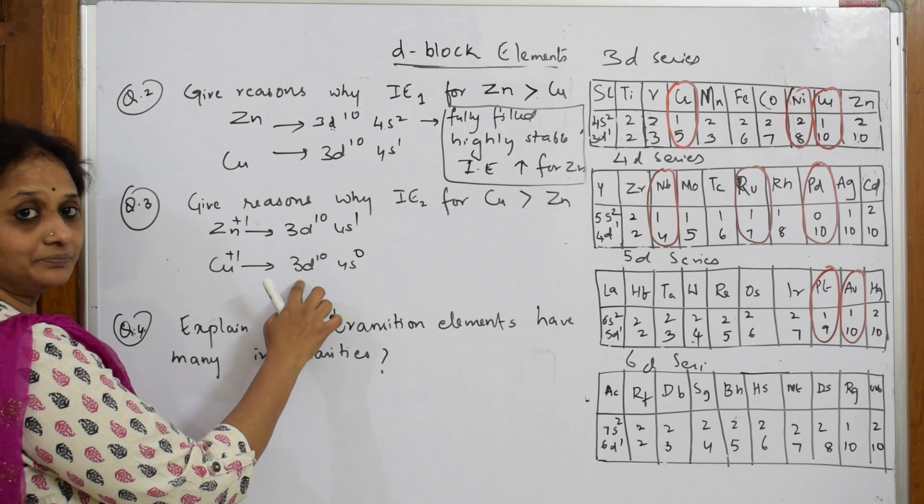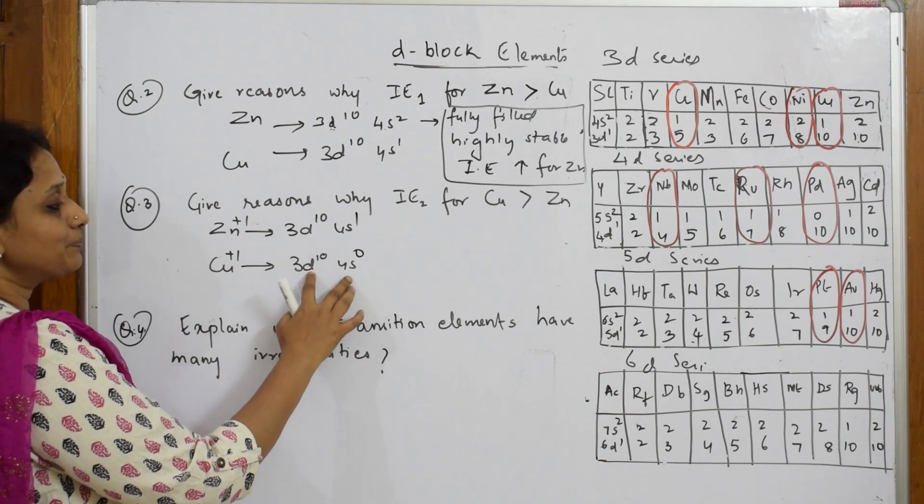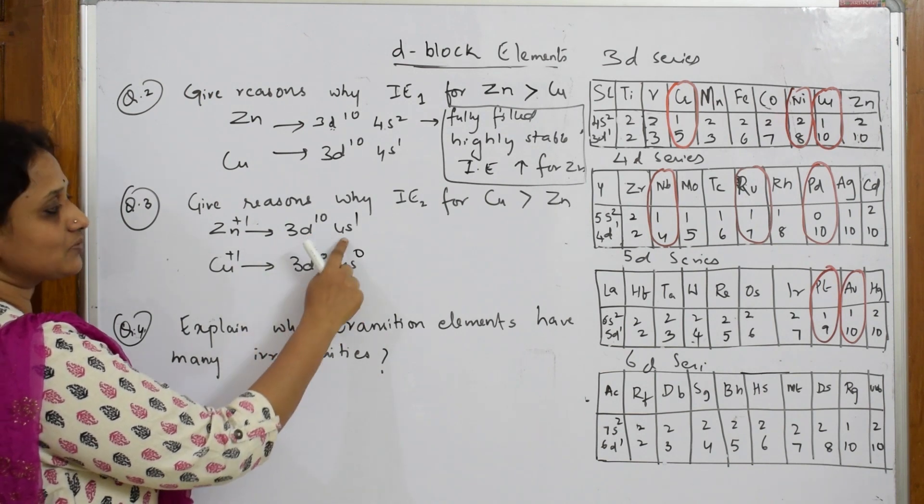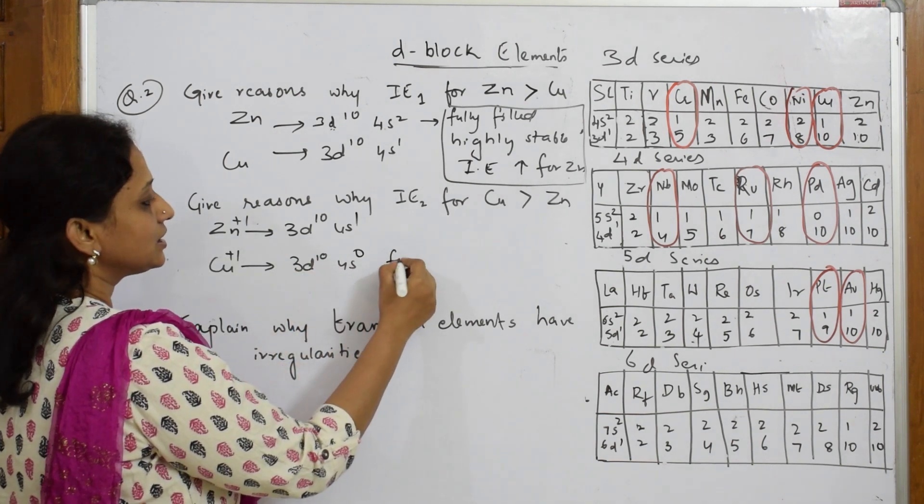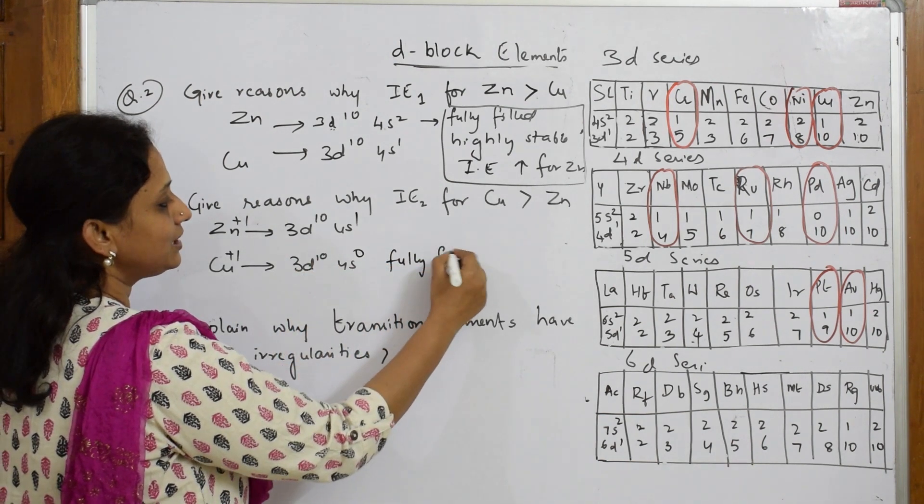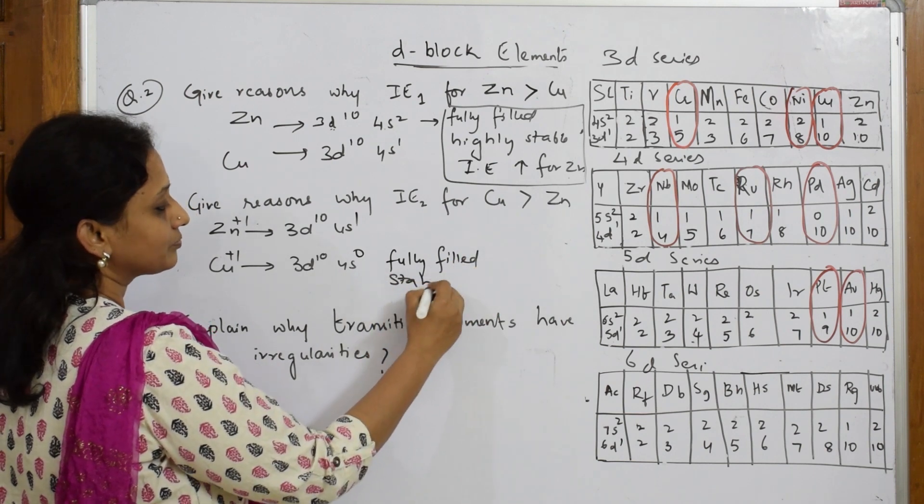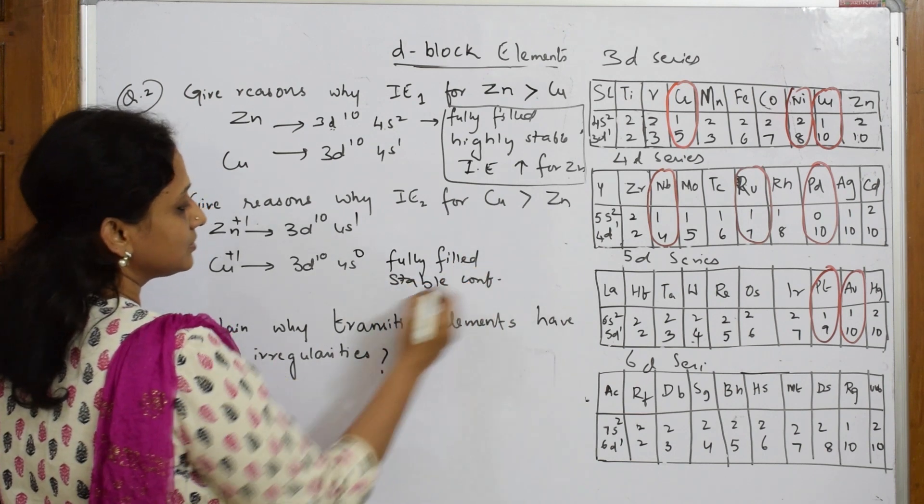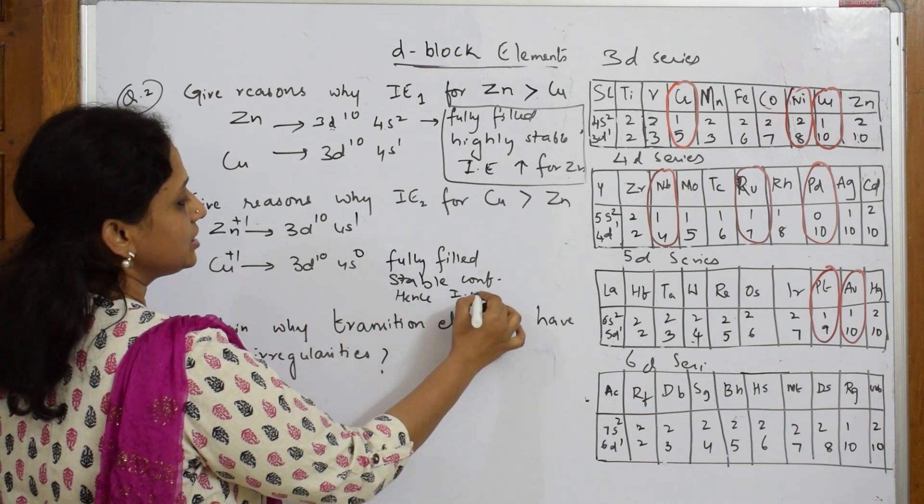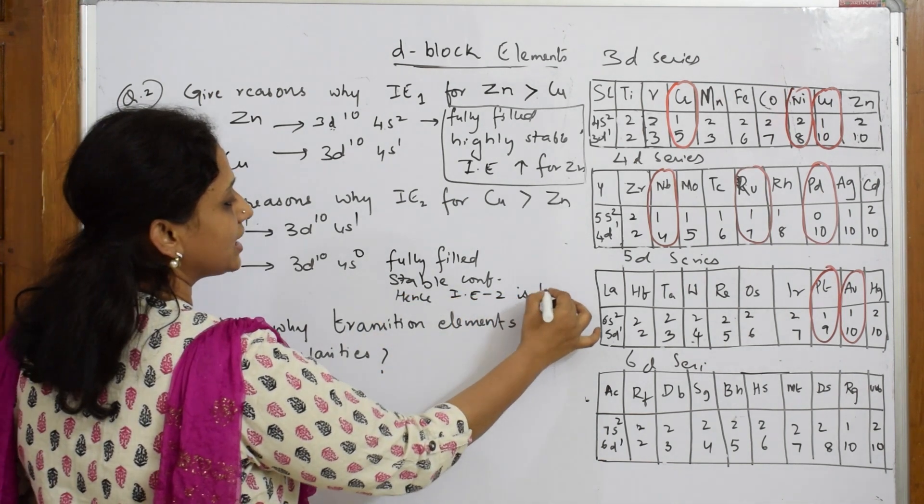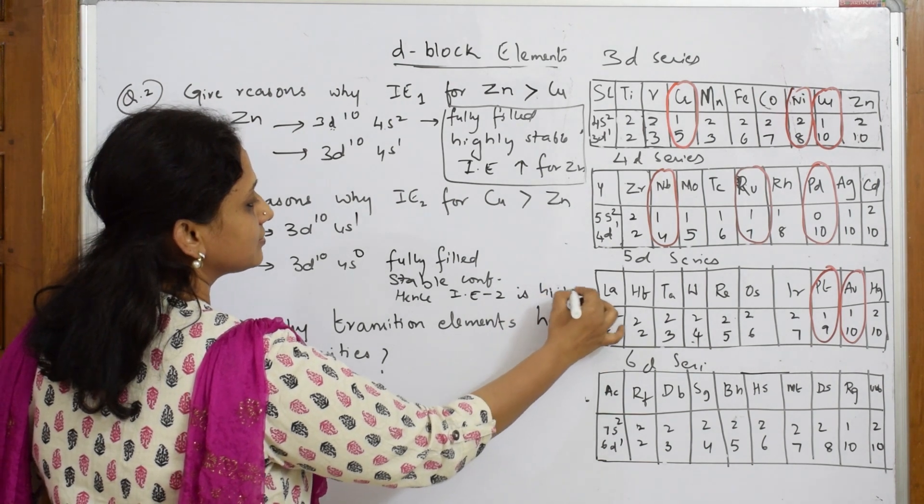Now for copper, one electron I have to remove - this becomes 4s0. Now see, compare the stability between two. This is fully filled. Now this is completely stable compared to this because there's one half-filled electron there. So now you'll write your reason: this is fully filled stable configuration, hence IE2 is higher.